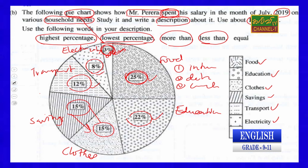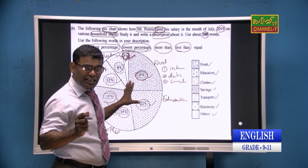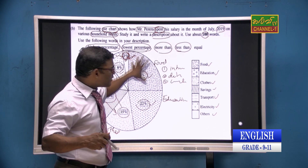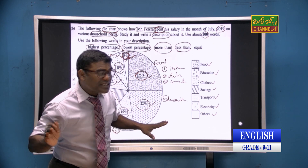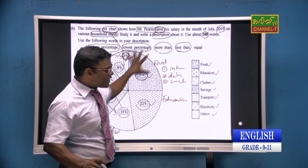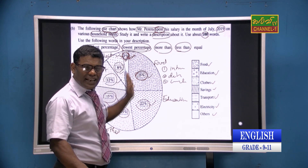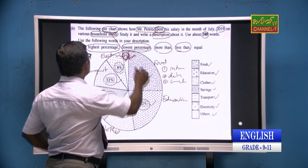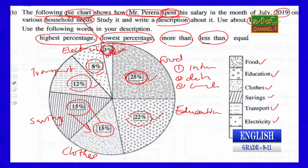Don't go on your own. Today I am going to provide an easy approach — how you can make a sentence. Give your attention towards me because I like to explain and give you the chance to understand how to describe this pie chart. You are going to write about 100 words. First, you can write using the heading as an introduction. From the question, we can understand what is in it. The pie chart shows how Mr. Pereira spent his salary in the month of July 2019 on various household needs.